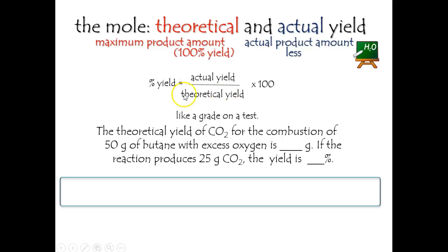And here's the formula. If you're a formula person, I don't normally think like this, but there it is. It's the actual over the theoretical times 100. The theoretical yield of carbon dioxide for the combustion of butane—we're burning butane with plenty of oxygen, so we can ignore it—is how many grams? And if we only got 25, what's our yield? So it looks like we're going to go ahead and do a three-step gram-to-gram conversion.